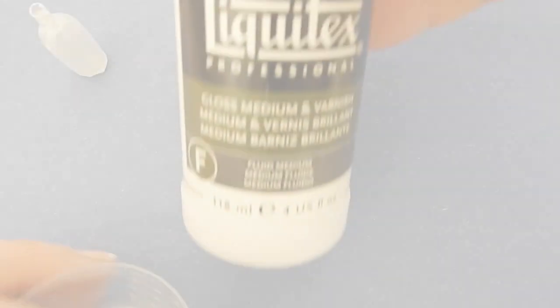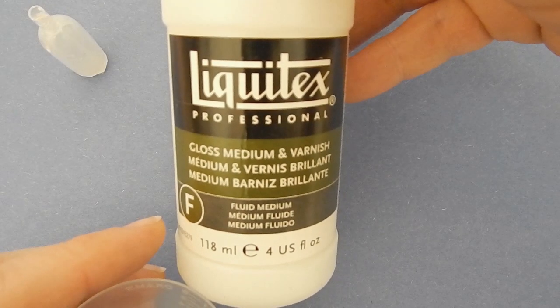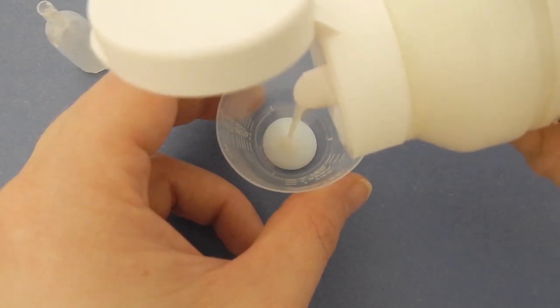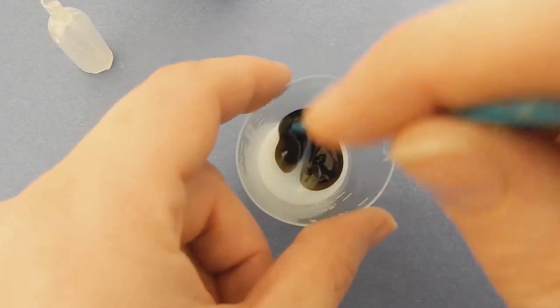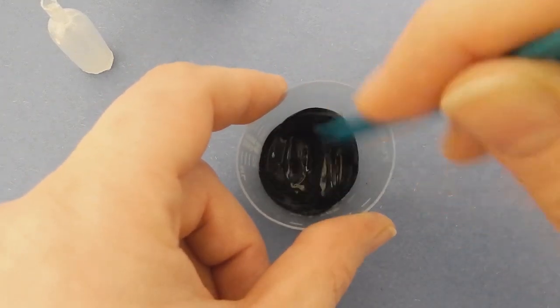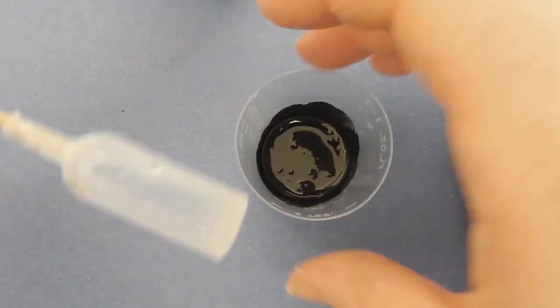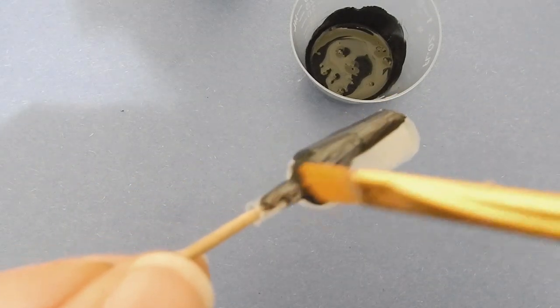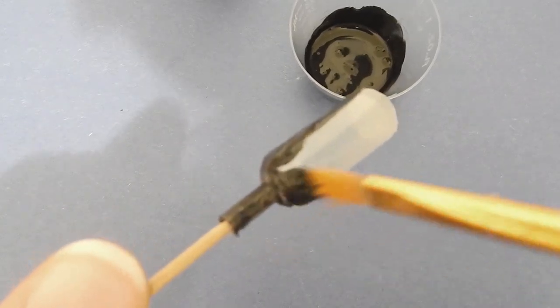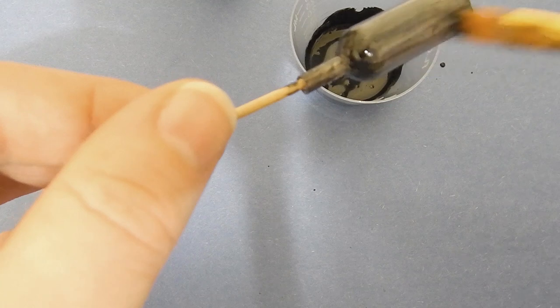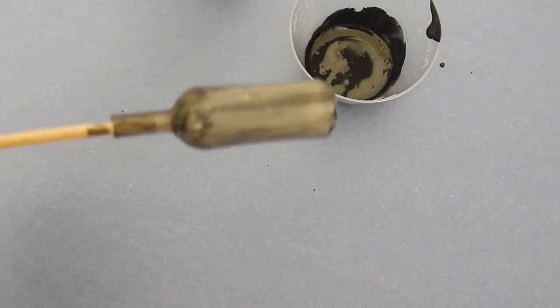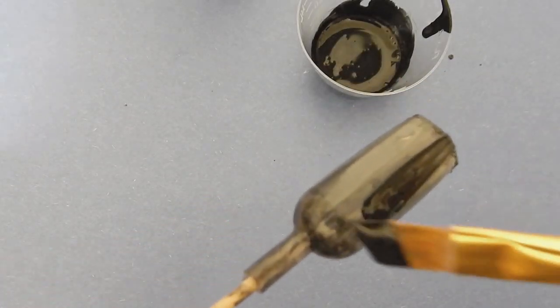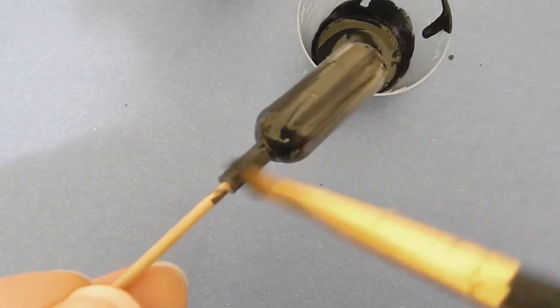I'm using gloss medium varnish and some black acrylic paint. I chose this Liquitex varnish because when it dries there's still some flexibility to it, and you'll be able to squeeze the bottle and use it without the paint cracking. I'm going to do two coats to get the nice glass finish that I'm looking for.